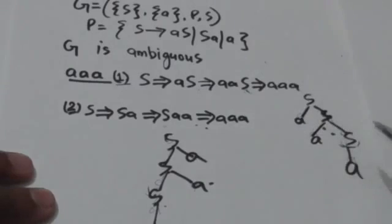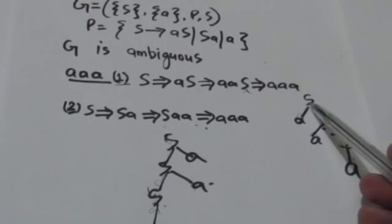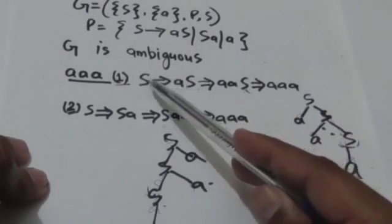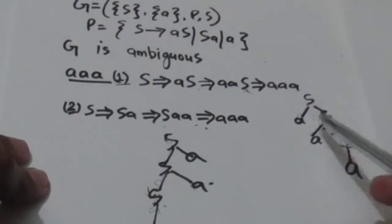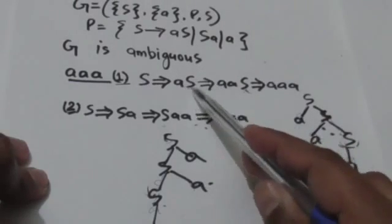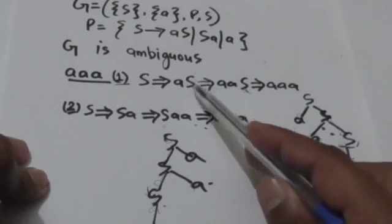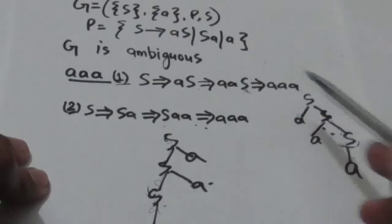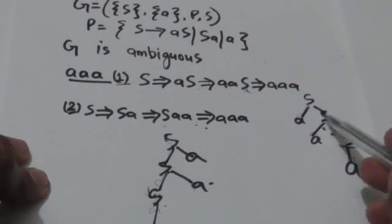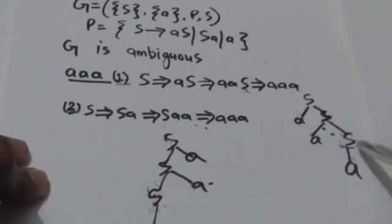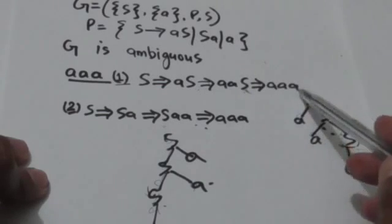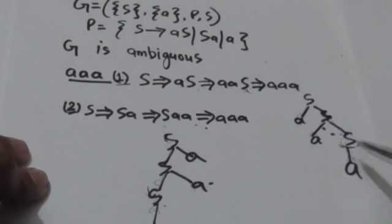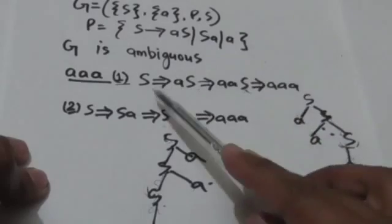This is the derivation tree corresponding to this leftmost derivation. S is the start symbol and root node. First I applied the production rule S derives AS, so children of this S will be A and S from left to right. In the second step, I applied S derives AS to the right-child S, so its children are A and S. Finally, to the remaining S I applied S derives A, so its child is A. This derivation tree represents the first leftmost derivation.